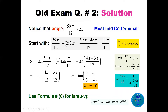Any angle greater than 2π or less than 0 requires finding a coterminal angle by subtracting multiples of 2π. Dividing 59 by 12 gives about 4-point-something, so we can subtract 4π (which is two complete cycles). Computing 59π/12 − 48π/12 gives the coterminal angle 11π/12.